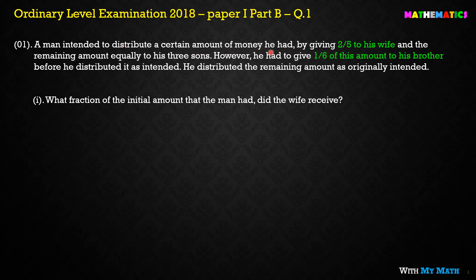Let me explain each part. He intended to give 2/5 portion to his wife from the total initial amount. The remaining amount was to be given equally to his three sons. So the remaining part for the sons was 3/5. However, he had to give 1/6 of this amount to his brother first.